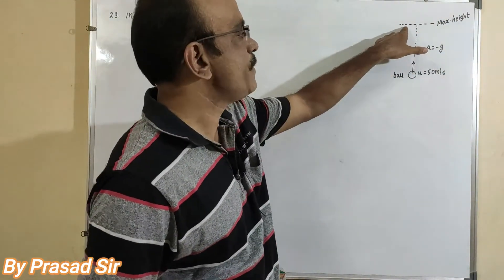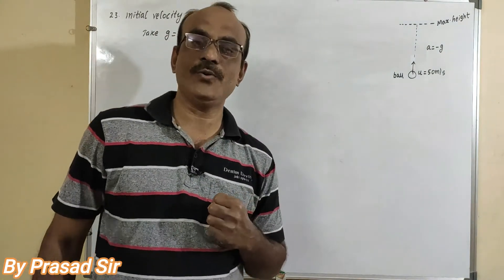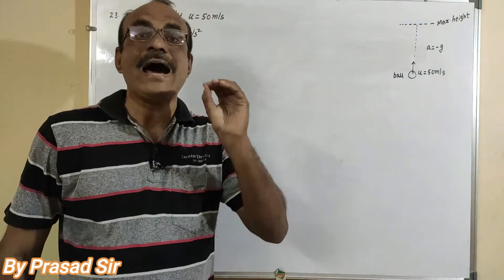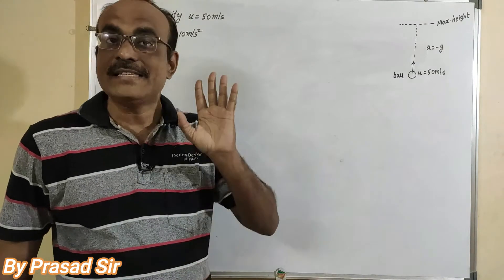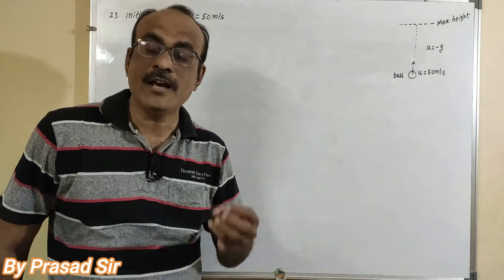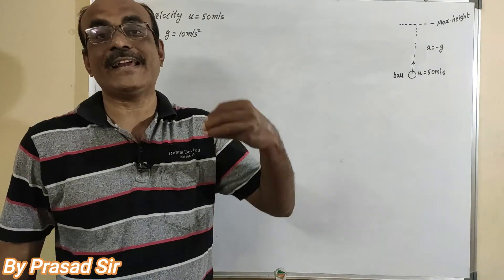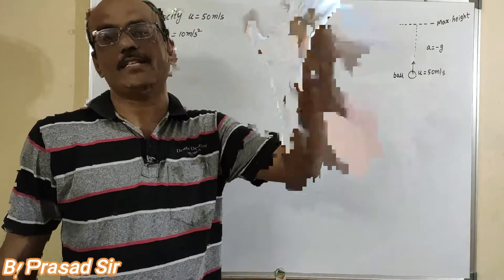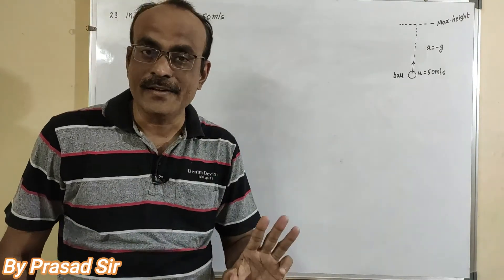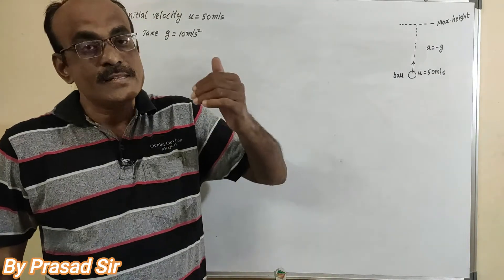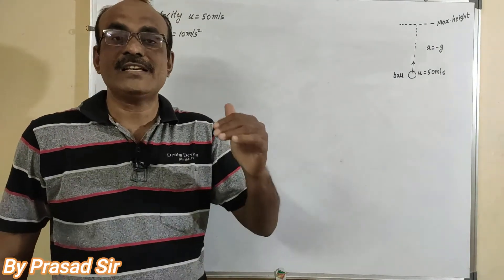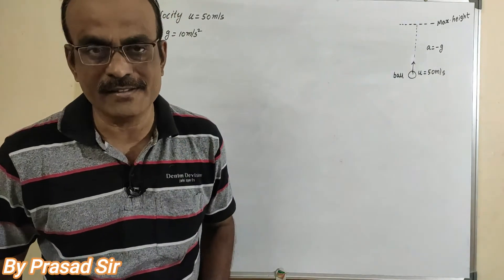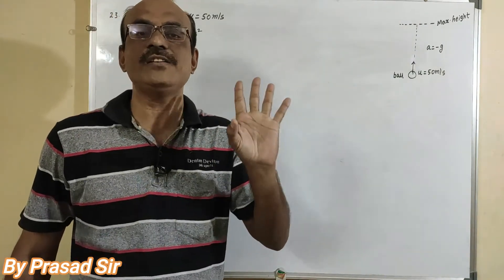We need to calculate: first, the maximum height; second, the time required to reach the maximum height; and third, the velocity of the body at half of the maximum height. These are the three parts of this question.